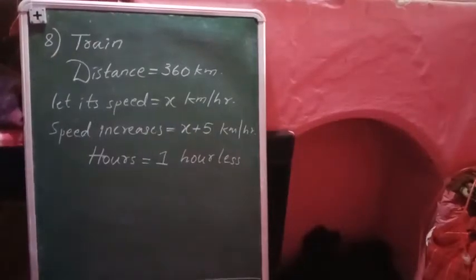Hello students, we are discussing question number eight, quadratic equation second exercise. Here, a train is traveling from one place to another, and the distance is 360 kilometers, which is not going to change because the train starts and comes back to the same place.